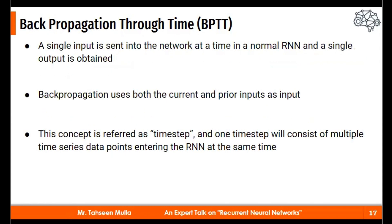In backpropagation, we have a single input which is being sent to the network at a single time for a normal recurrent network, where only single output is obtained. But backpropagation uses both the current and prior inputs as input. Now, as I said t equal to four, that means there will be three more states, previous states are recorded.